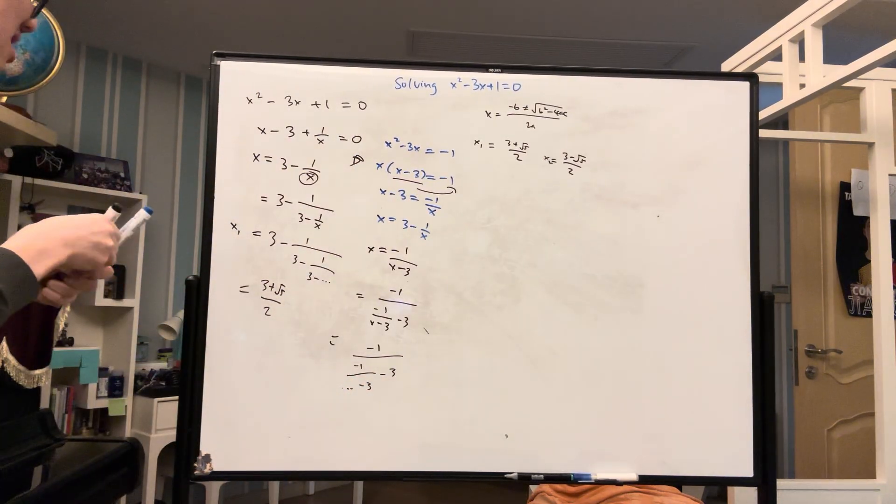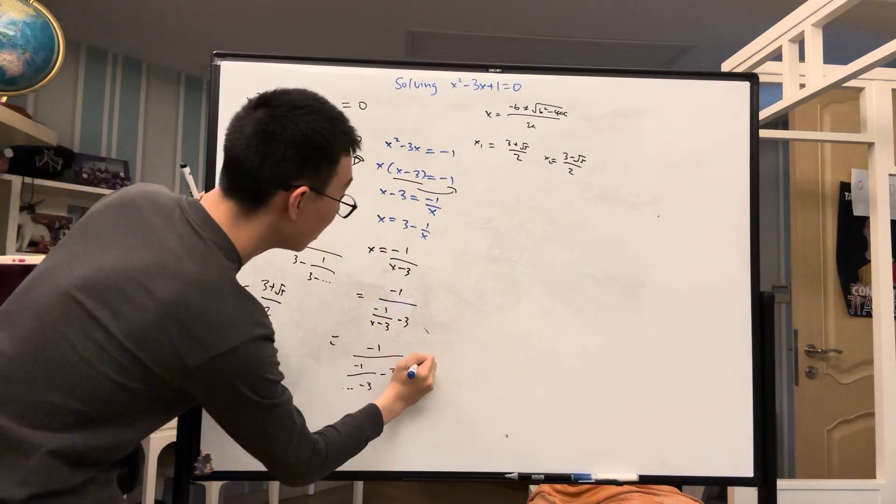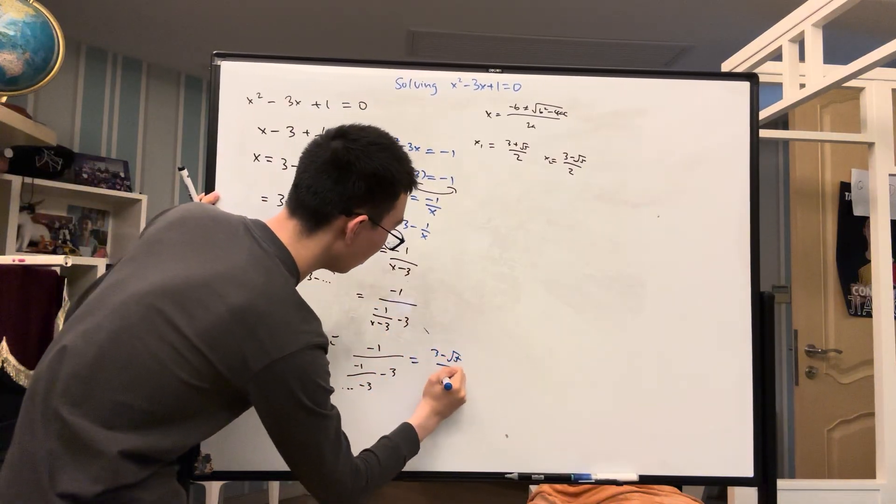And this would be our second root, which is 3 minus root 5 over 2.